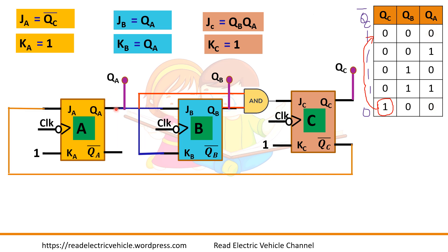So QA will become 0. If QA is 0, here JB and KB are 0, 0. 0 means it remains in the same state. No change will be there. So here 0 means again it maintains the same state. Then it is an AND gate, so if any of the input is 0, it becomes 0. So J is 0, K is 1, so output QC will become 0. So it will reset, come to 0, 0.